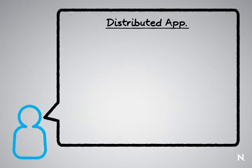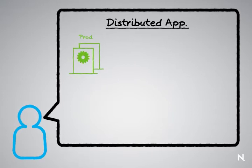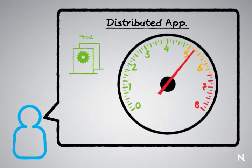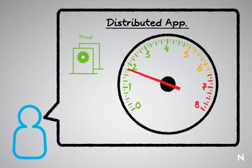They have an application that's distributed. And when customers are thinking about the distributed application, a lot of the times they're thinking about the production servers that make up the application. In this case, they have two servers. A lot of the times they forget about all the other servers that they have in their environment to make sure that this production application and production workload works as well as it's supposed to.